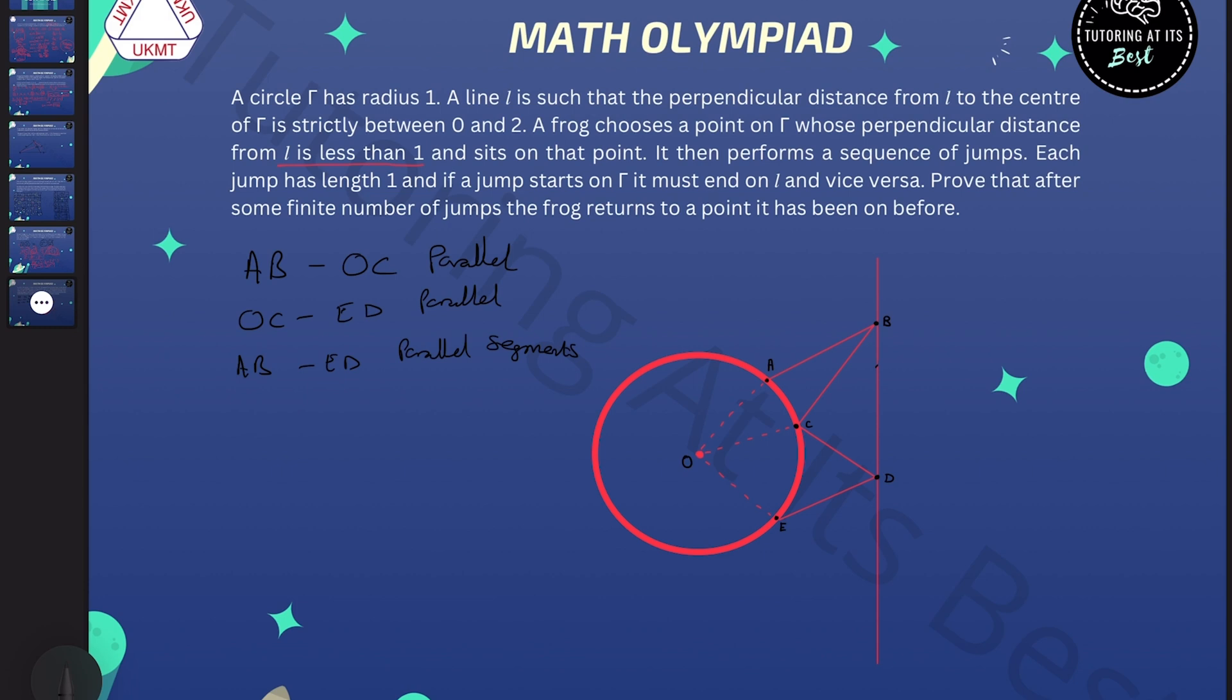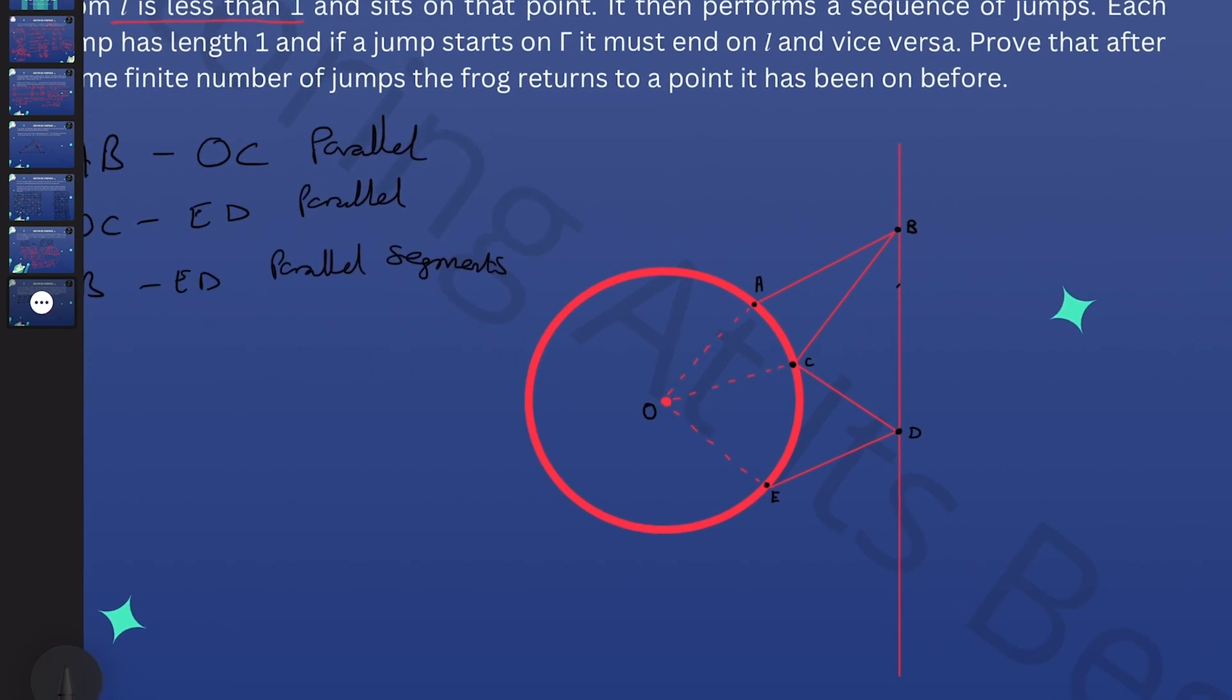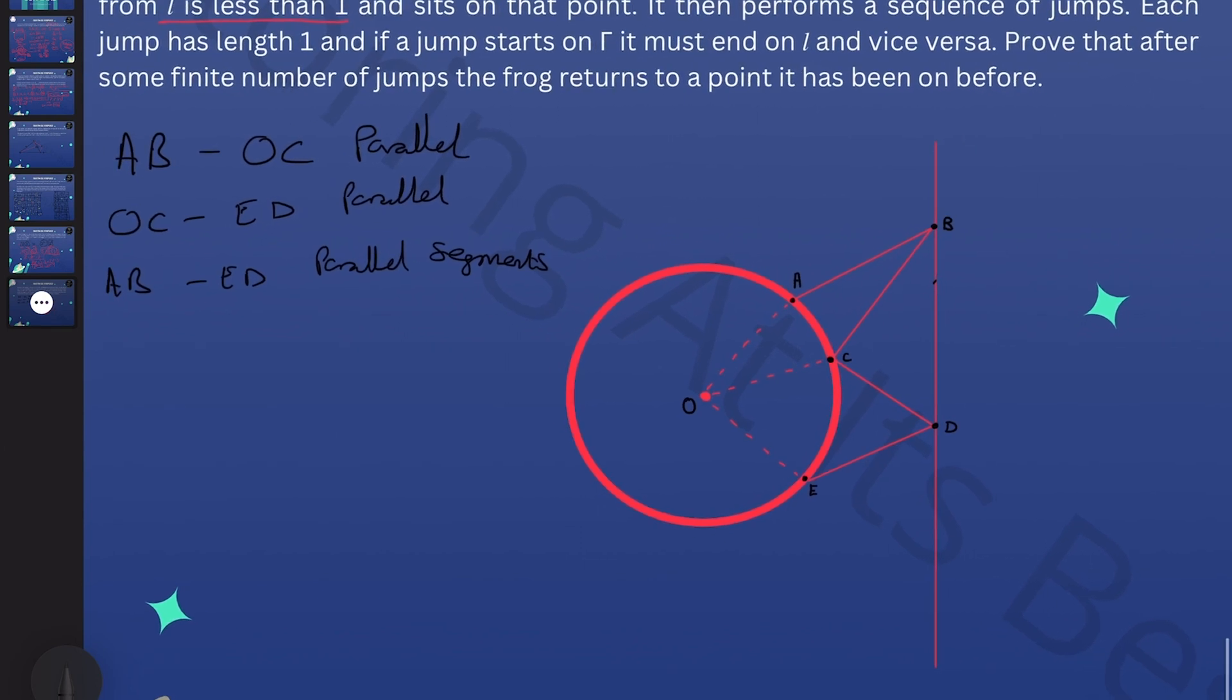Let's go ahead and dive into this. Doing this carefully and slowly, the frog is now sitting at position E. He then jumps one, and we've got a parallelogram down here, then jumps to B, jumps to A and that's another parallelogram there.